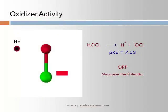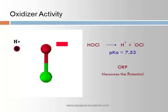All oxidizers have the ability to transfer and move electrons. This electron activity gains or loses electrons. Those that lose electrons are oxidized, and those that gain electrons are reduced. The electron balance that exists is called ORP, or Oxidation Reduction Potential, also called redox potential, and is measured in millivolts.